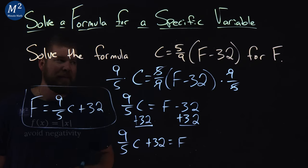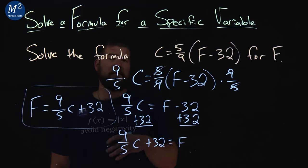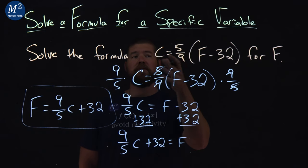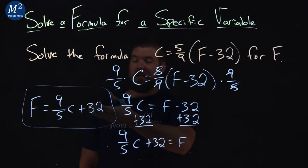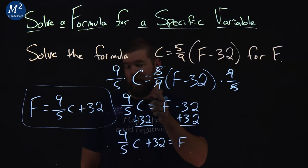And there we have it. We've easily, pretty quickly, solved for F in our formula from Celsius to Fahrenheit. Now Fahrenheit to Celsius there. So there we got it. Fahrenheit is equal to 9 fifths Celsius plus 32. The more you know.